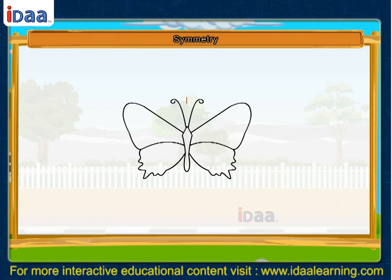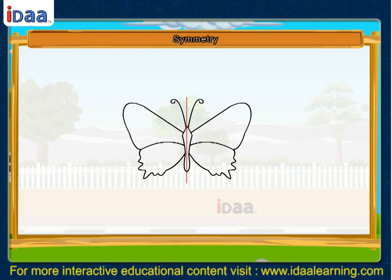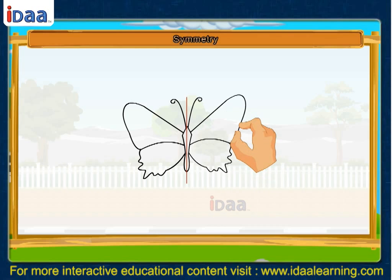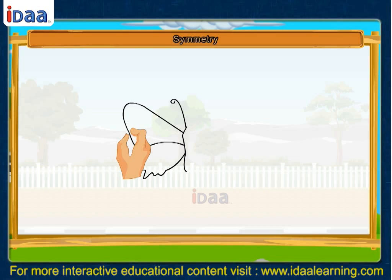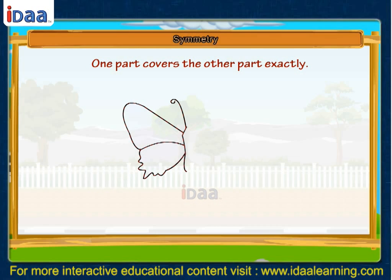Let us draw a line in the middle of the figure. Let us fold one part on the other part. What do you see? One part covers the other part exactly.